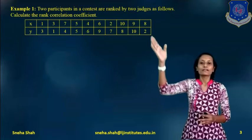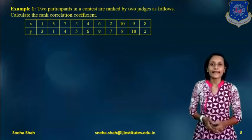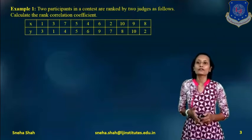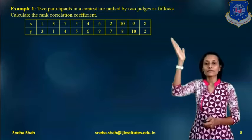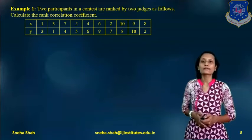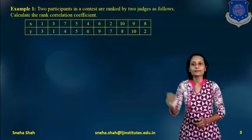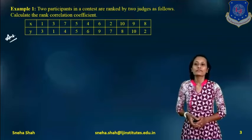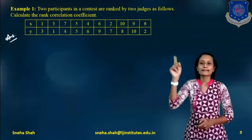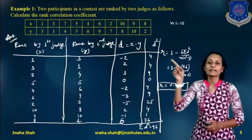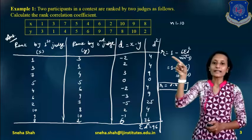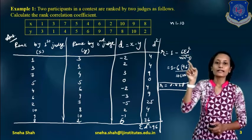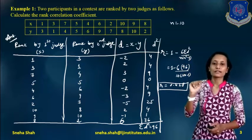Suppose judge x gives a rank of 1, and judge y gives that same contestant rank 3. Likewise, there will be a difference between judge x and judge y's ranks. If we want to correlate between these two ranks, it will be defined by the rank correlation coefficient.